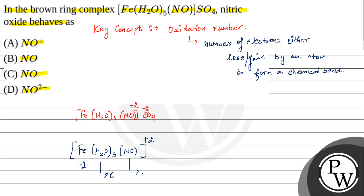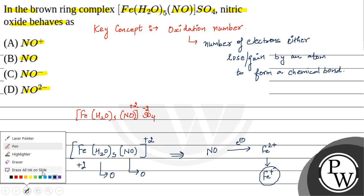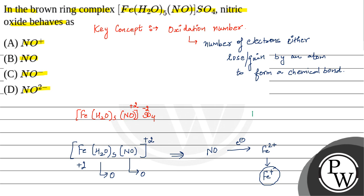But actually, this is not the case. Inside, the NO, which is nitric oxide, basically transfers one electron to Fe2+. After taking one electron, it becomes Fe+. The NO, nitric oxide, converts into NO positive, and this NO positive is a nitrosyl ligand.